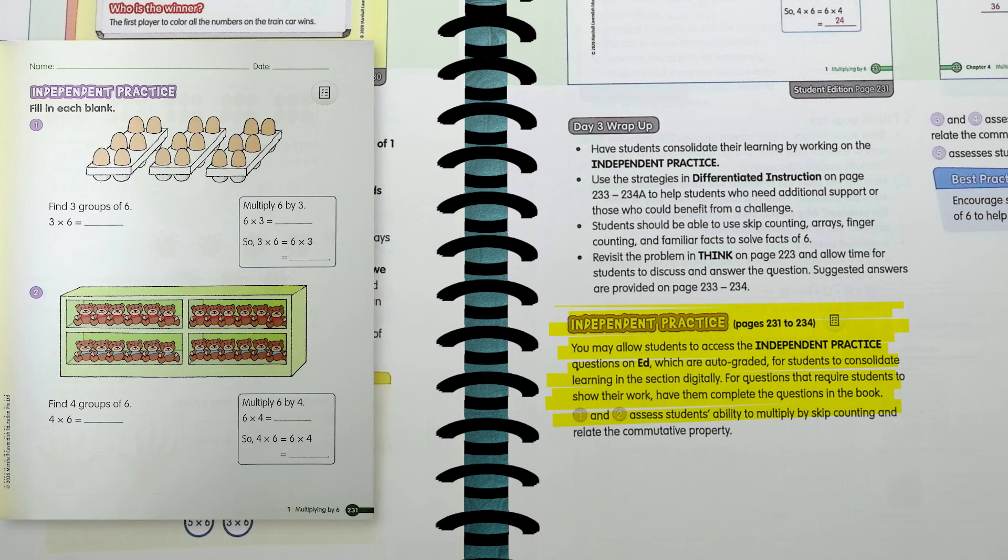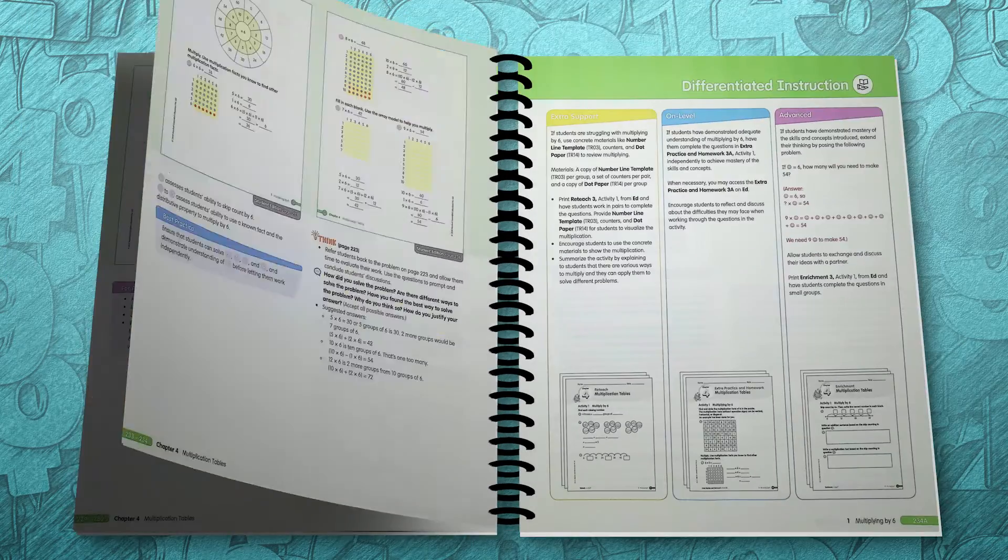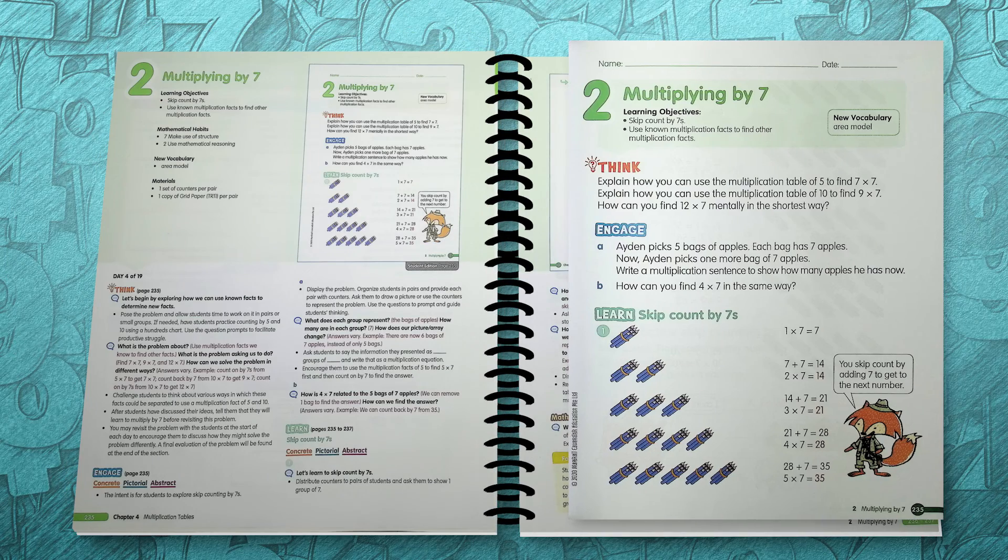The students can then complete the independent practice in the student book. And this is the end of section 1. Section 2 also takes 2 days to complete and works with multiplying by 7 using a lot of the same teaching methods in section 1.